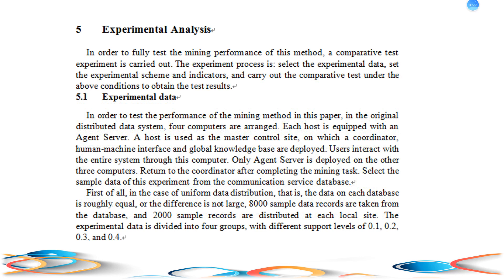In order to fully test the mining performance of this method, a comparative test experiment is carried out. The experiment process is: select the experimental data, set the experimental scheme and indicators, and carry out the comparative test under the above conditions to obtain the test results. In order to test the performance of the mining method, in the original distributed data system, four computers are arranged. Each host is equipped with an agent server. One host is used as the master control site, on which a coordinator, human-machine interface, and global knowledge base are deployed.